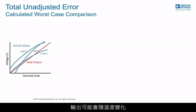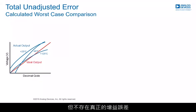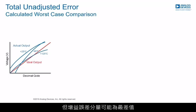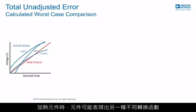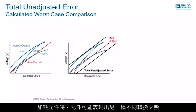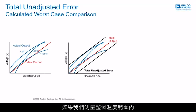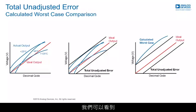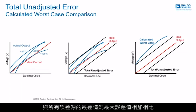The output may change over temperature. At room temperature, the offset may be at its worst with no real gain error. At minus 40°C, the offset error might be fine, but there may be a gain error component at its worst. When the part heats up, it may exhibit yet another differing transfer function. Taking a worst-case measurement across temperature, process, and operational parameters gives the total unadjusted error (TUE), which provides a far better indication of device performance than simply adding the worst-case maximum error sources together.